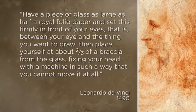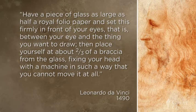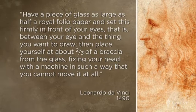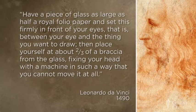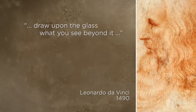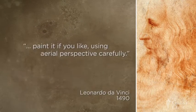Around 1490, Leonardo wrote down the following method for getting accurate proportions: 'Have a piece of glass as large as half a royal folio paper and set this firmly in front of your eyes — that is, between your eye and the thing you want to draw. Then place yourself at about two-thirds of a braccio,' that would be about 15 inches, 'from the glass, fixing your head with a machine in such a way that you cannot move it at all.' He goes on to tell us to shut one eye and draw upon the glass what you see beyond it, suggesting transferring the drawing to paper and ending: 'Paint it, if you like, using aerial perspective carefully.'